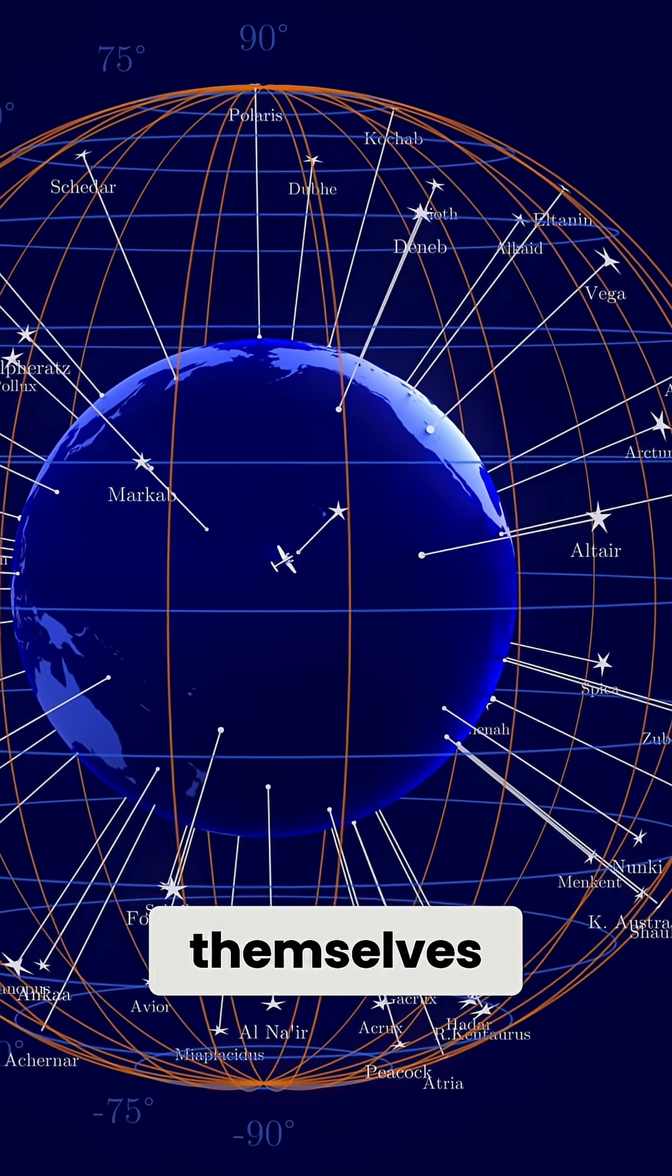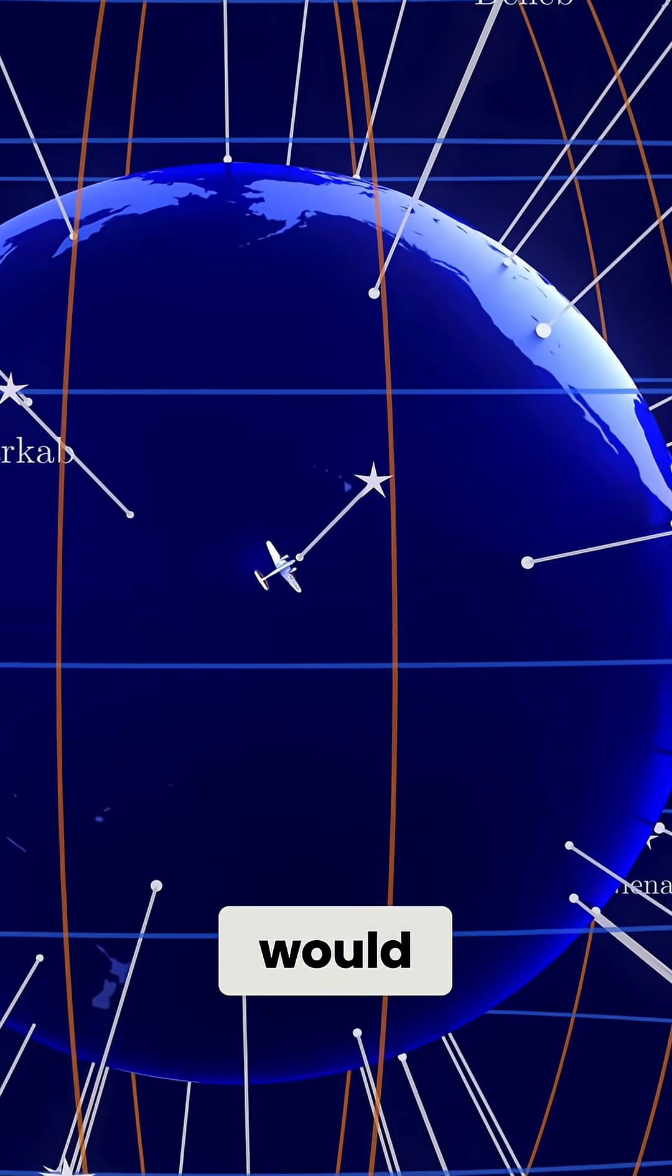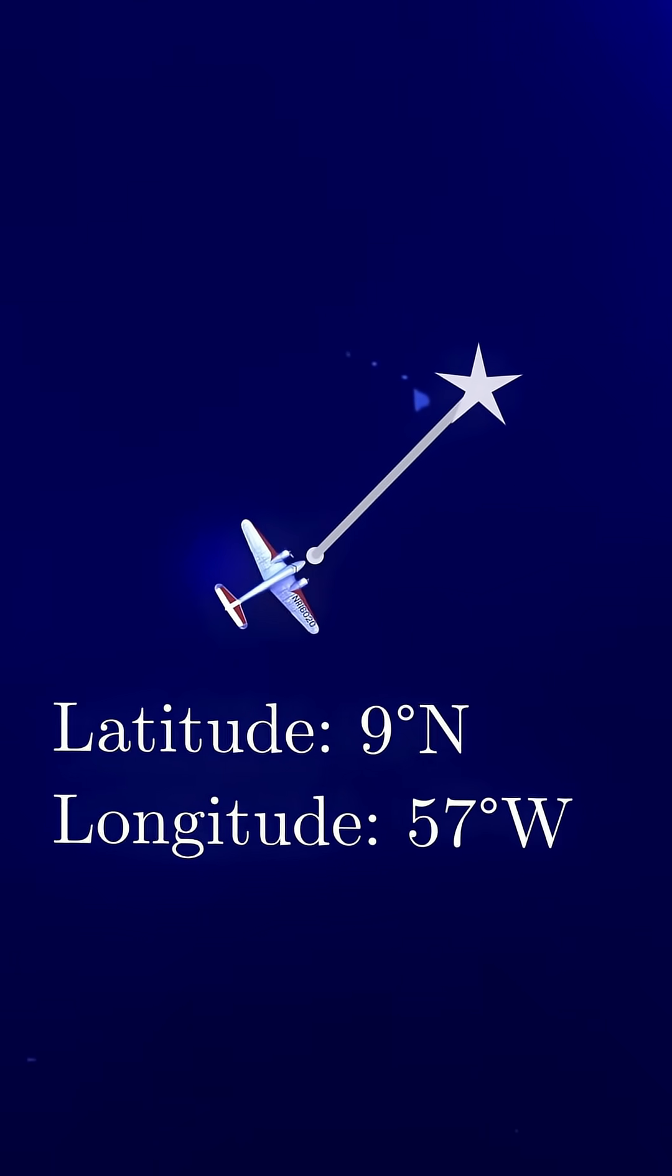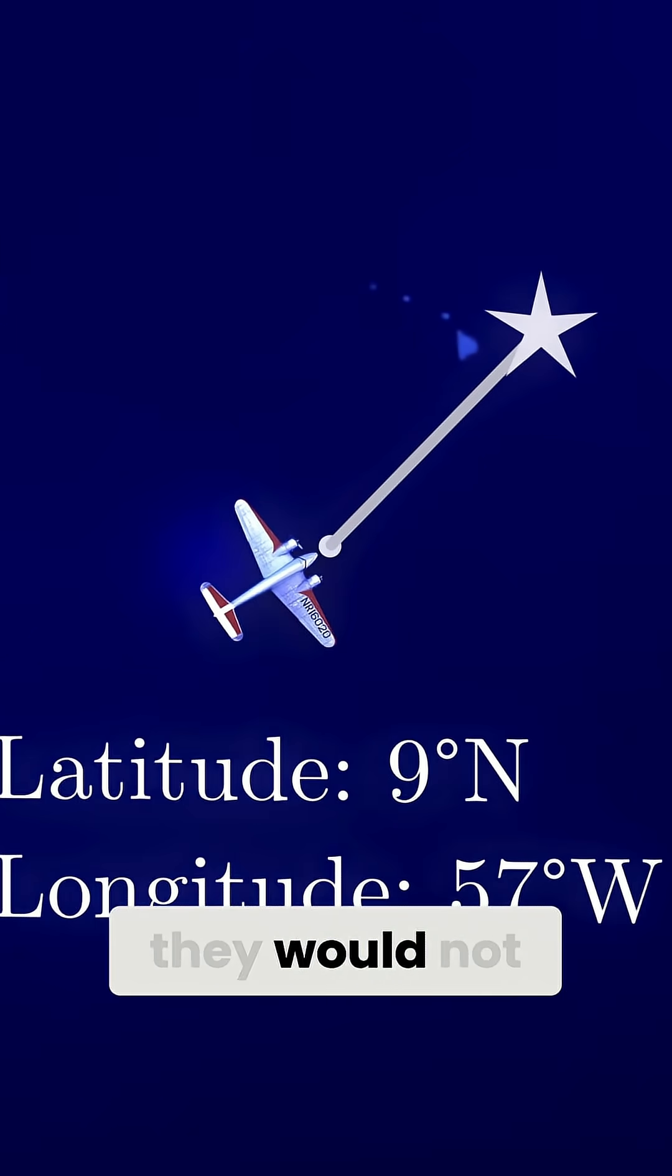If they found themselves directly under a navigation star, then they would immediately know their position. But generally, they would not be that lucky.